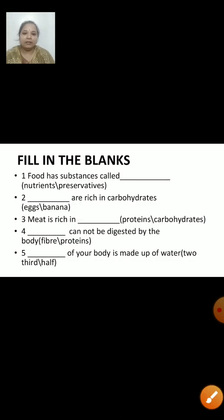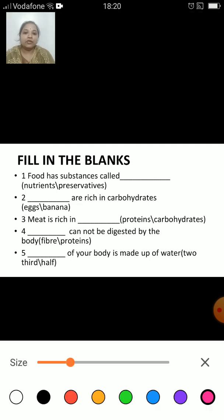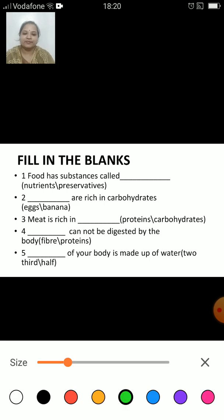Now, fill in the blanks. You have to choose the correct option. I am going to read the questions, listen carefully and be ready with your answers. Food has a substance called dash — nutrients or preservatives? The correct answer is nutrients. Food has substances called nutrients which the body needs for various purposes. Different foods have different kinds of nutrients, so we have to eat different kinds of food every day.